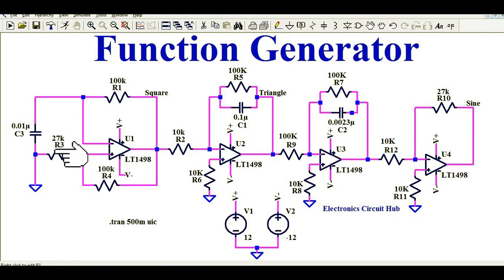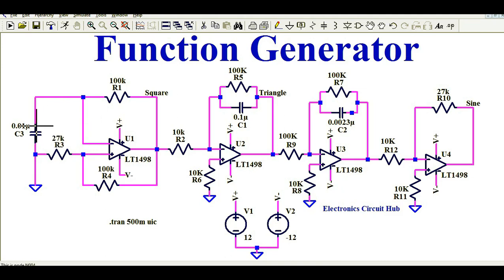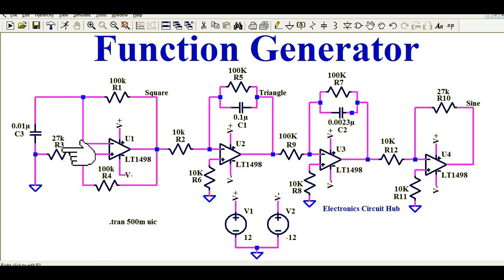So this op-amp U1 LT1498 is powered up with dual supply — one positive and one negative supply. You can see this is some kind of multivibrator circuit. I used one capacitor and two resistances. Since this is a multivibrator circuit, it generates a square wave output. I will show you what is the output of this first block — it is the square wave. This circuit is the square wave generator.